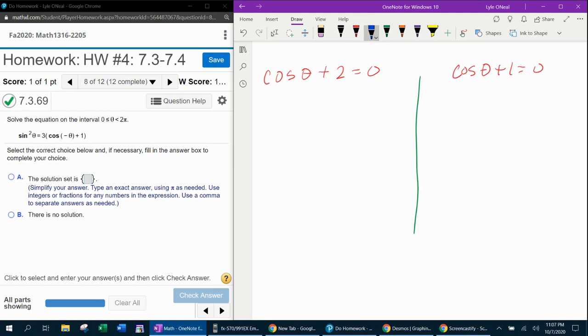And let's see what happens. Moving the plus two over gives me cosine theta equals negative two. And this particular factor is not going to produce a solution. And I'll give you a brief explanation why that is.